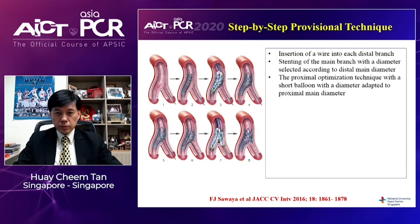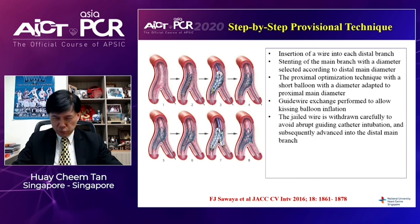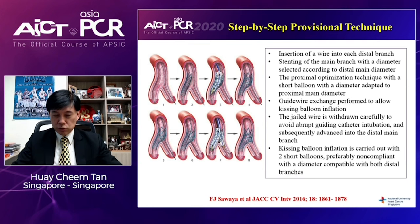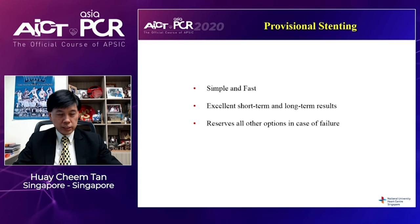We can look at provisional stenting as a technique where you insert the wire into the two different branches, followed by stenting of the main vessel, then a proximal optimization technique using a balloon with diameter adapted to the proximal main vessel diameter. Some operators then perform a kissing balloon inflation by switching the guide wire from the side branch to the main vessel and inflating simultaneously. This last part is optional in patients undergoing a provisional stenting strategy.